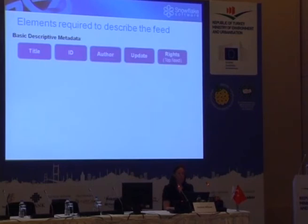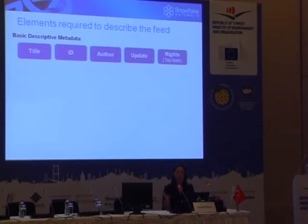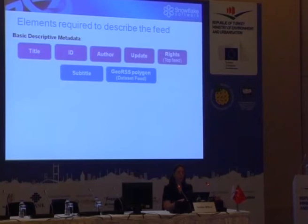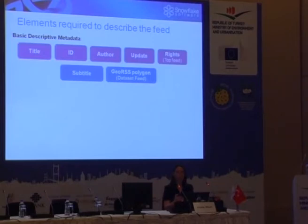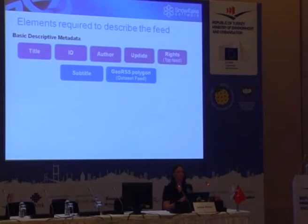The technical guidelines require five elements to describe the feed: title, ID, author, the time it was updated, and any access and use rights — which should match your metadata. Optionally you can include a subtitle and define the geographic extent using a GeoRSS polygon. Adding the GeoRSS polygon allows users to read your Atom feed and view it in tools like Google Earth, Google Maps, and QGIS.